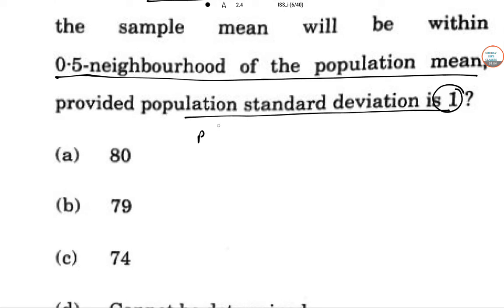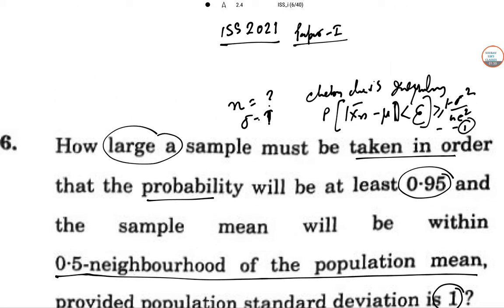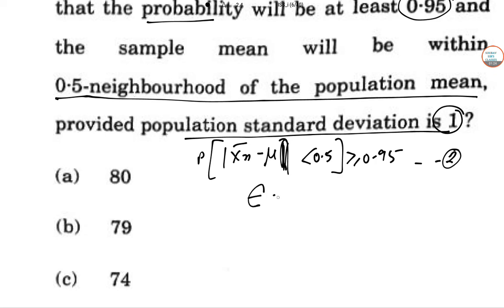Now with respect to the question, P of |x̄n - μ| less than 0.5 is greater than or equal to 0.95. So now we have two equations. If we compare these two equations, this will give you ε equals 0.5, and 1 minus σ² divided by n ε² equals 0.95.